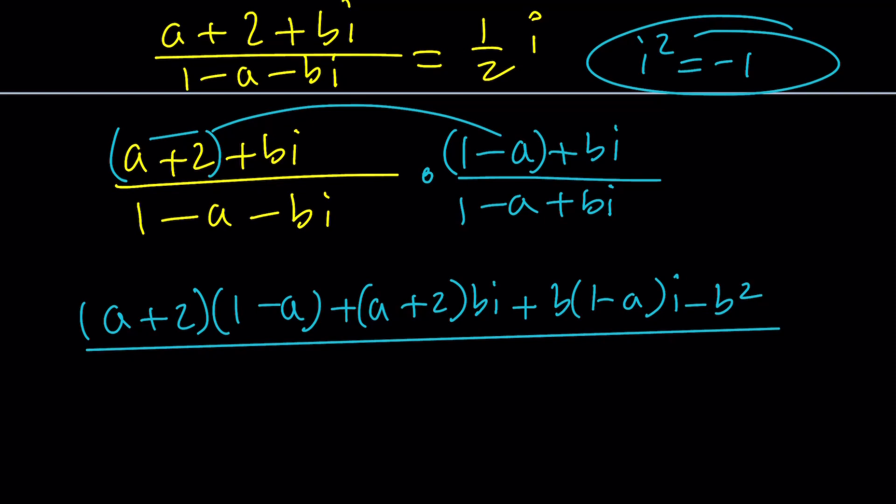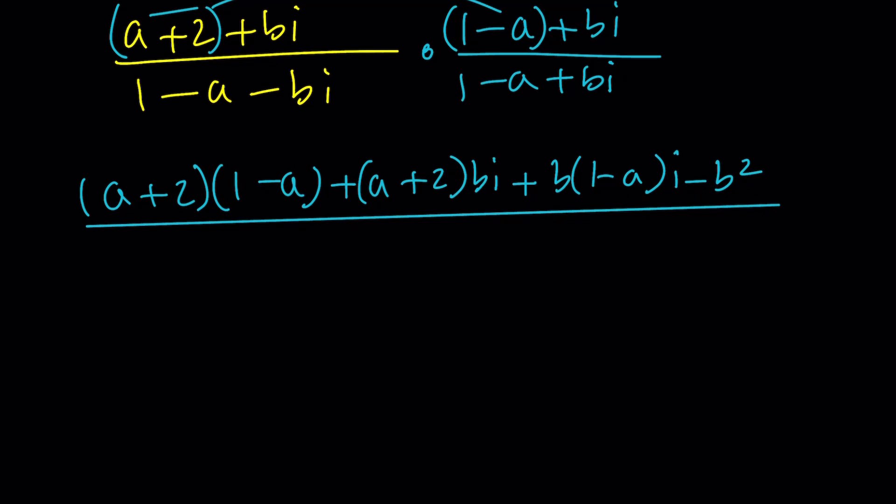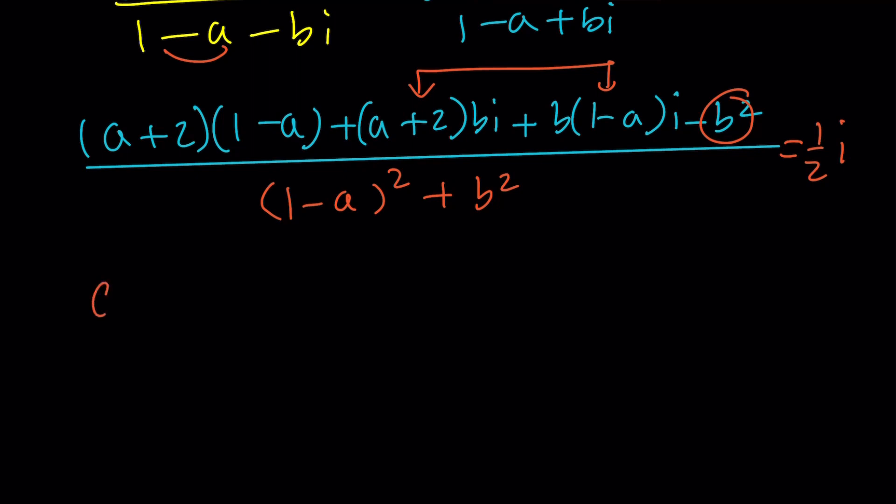And then we're going to divide it by the denominator. Now we're multiplying two conjugates, and when you multiply two conjugates, you always get a real number, which is the sum of the squares of the real parts and imaginary parts. So it's going to be 1 minus A squared plus B squared. And this is equal to 1 half of I. Now let's simplify this, put the imaginary and real parts together. So if you distribute here, you get A minus A squared plus 2 minus 2 A for the real part. And we're going to have a B squared minus B squared. And when you combine these together, you're going to get A B I and minus A B I. They're going to cancel out. And then we're going to get 2 B I and B I, which is going to give us 3 B I. And that'll be divided by the denominator. And this is going to equal 1 half of I.